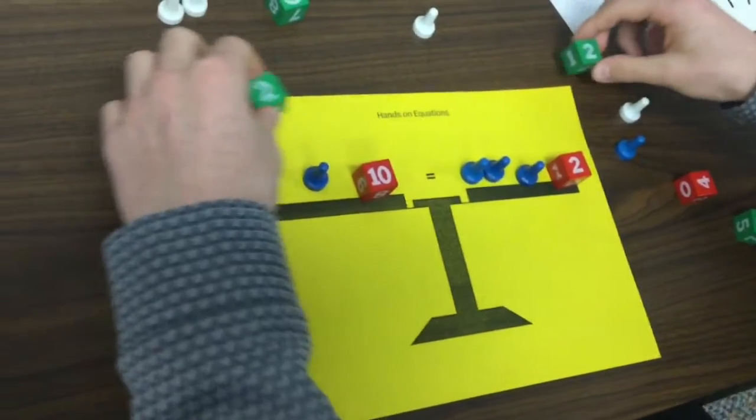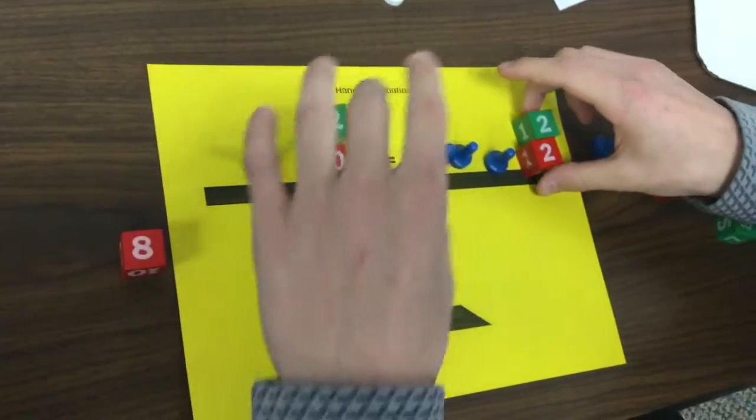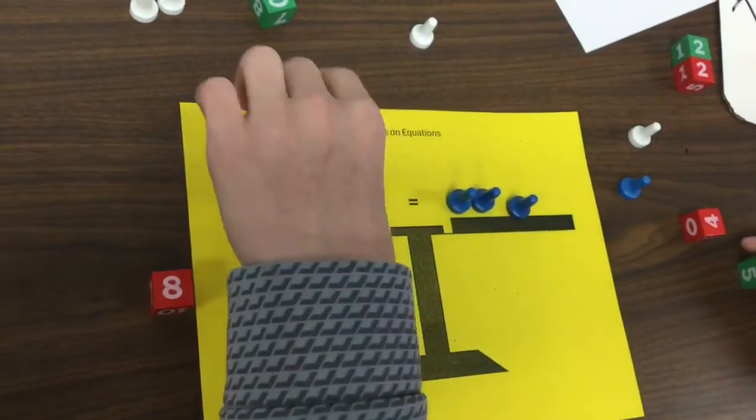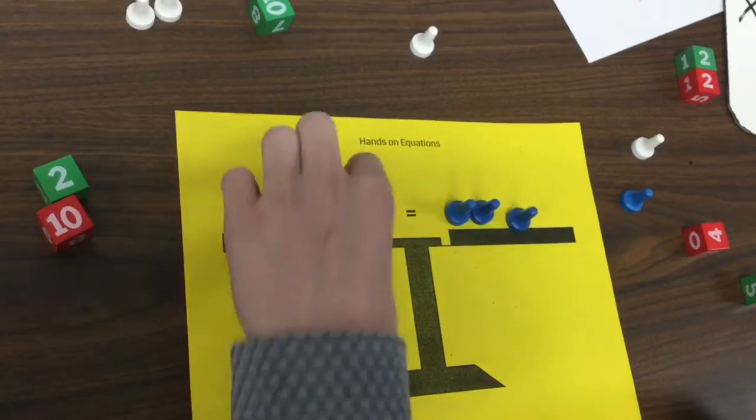So now what I'm going to do first is add the opposites, and this is the opposite. Just take those away, and I'm going to take this away, and I should get 8.